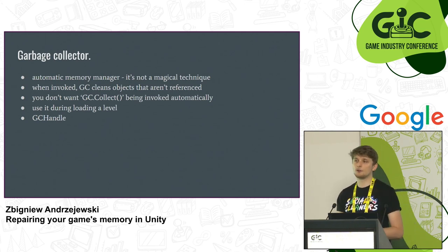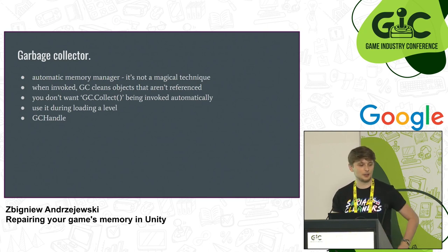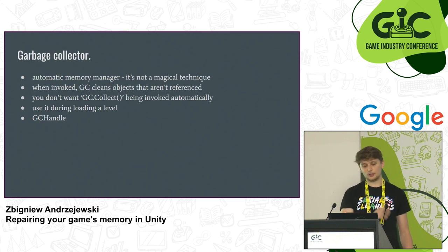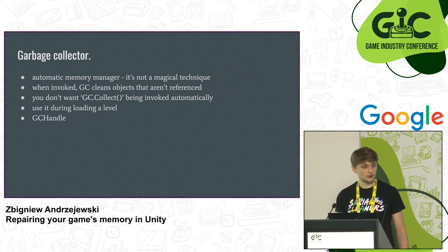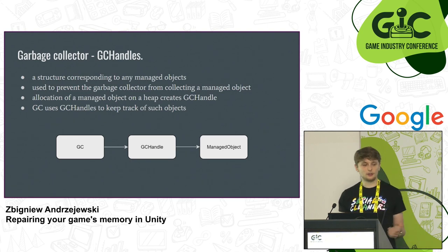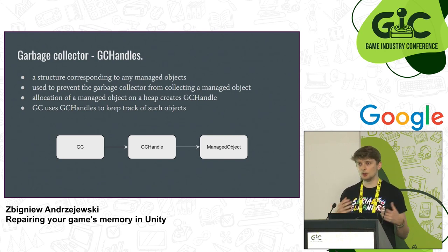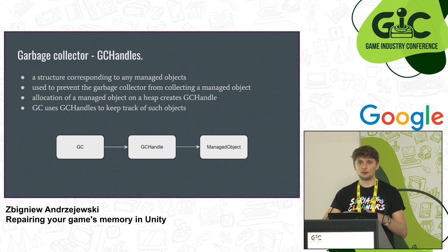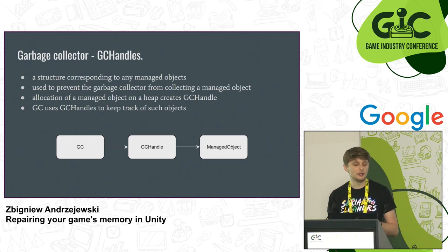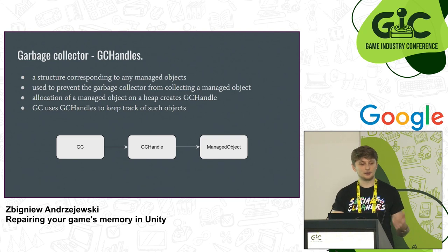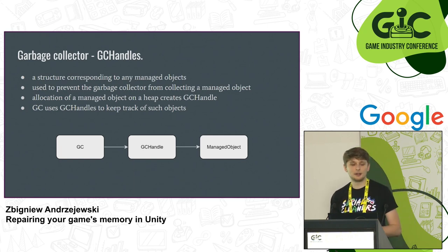It's actually better to have control over GC and invoke it, for example, during level loading when no player action is expected. There's also the notion of GCHandle — a structure that corresponds to any managed C-Sharp object in your code. It's used to prevent the garbage collector from collecting a managed object. It has types like weak reference, standard reference, or one that prevents the object from moving in memory. The GC handles it automatically, and we can find GC handles in memory snapshots, though mostly we don't want to.